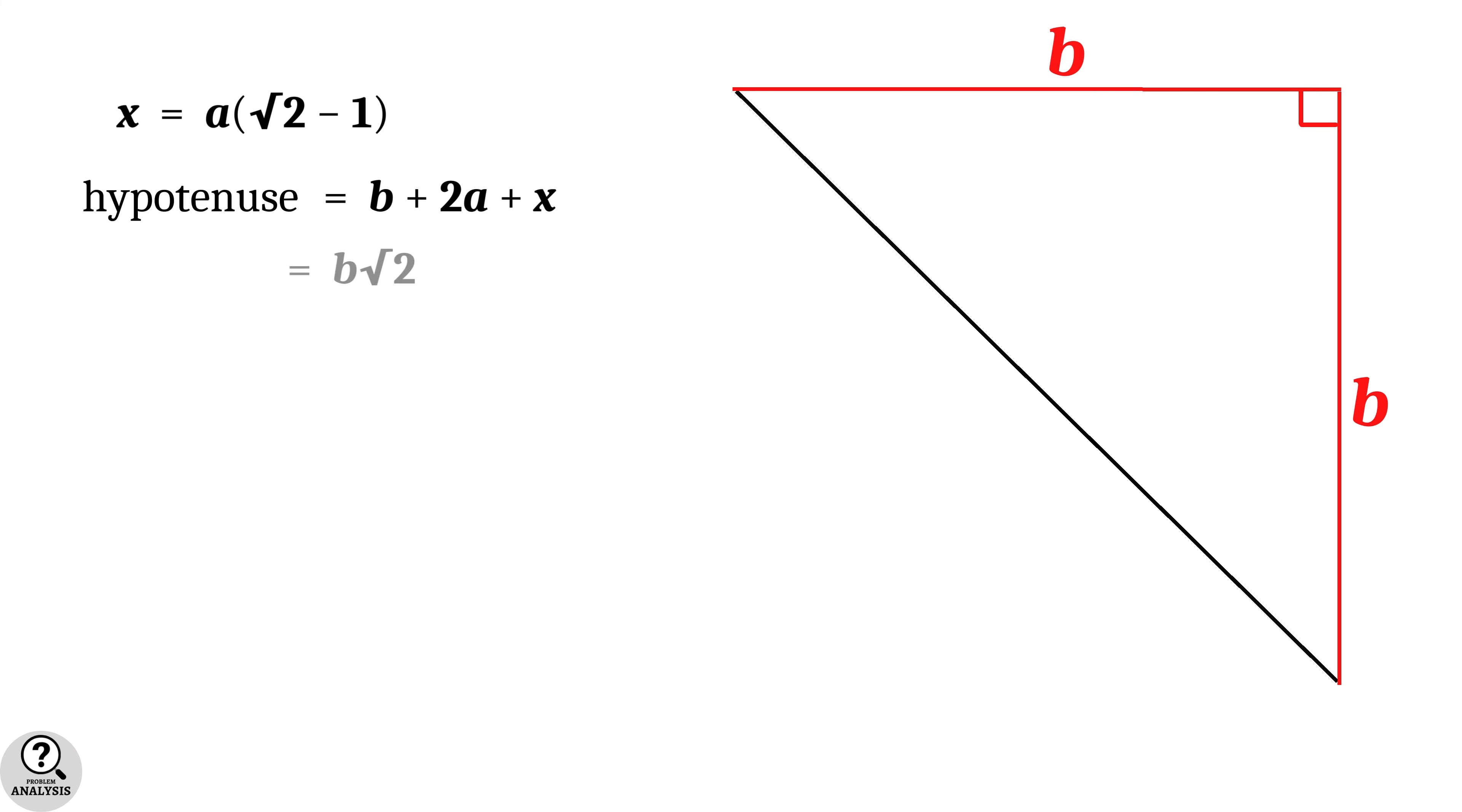And therefore this equation gives x equal to b root 2 minus b minus 2a, which is equal to b(root 2 - 1) - 2a.